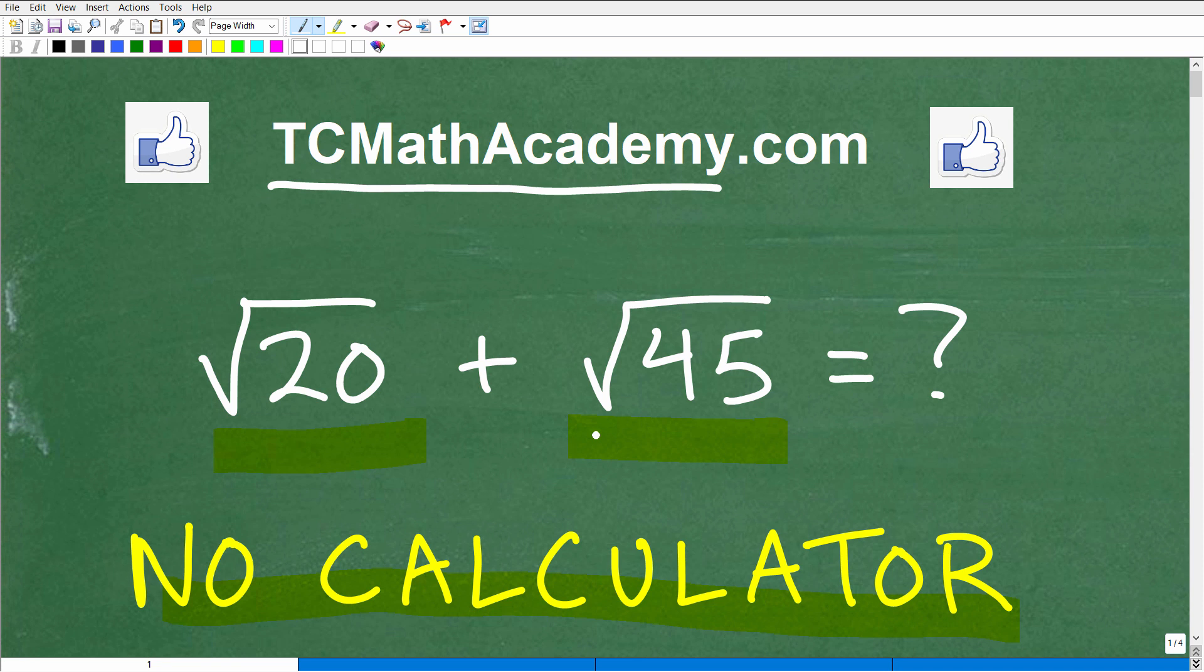Of course, I know you can handle that kind of problem if you were going to use your calculator. But what we're going to do in this problem is use our algebra knowledge and our knowledge of square roots and radicals to simplify this problem, i.e. adding two square roots or two radicals. So, if you can figure this problem out, go ahead and put your answer into the comments section.